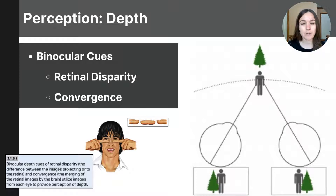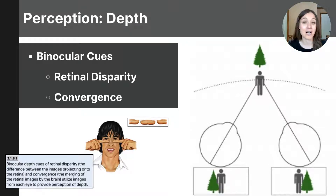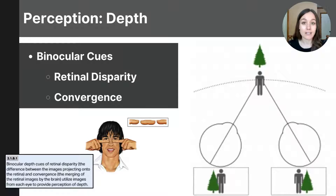Let's focus here on depth. Have you ever wondered how your brain is able to determine how far away objects are without actually going up and touching them or measuring them? The answer is probably not, because your brain does it so quickly. You've probably never even contemplated how your brain does this, and this is a question of depth. Our brain is taking in all kinds of visual information from our eyes, and it's relying on a variety of visual cues in our environment to determine just how far away objects are. Two different types of cues the brain uses are called monocular cues and binocular cues.